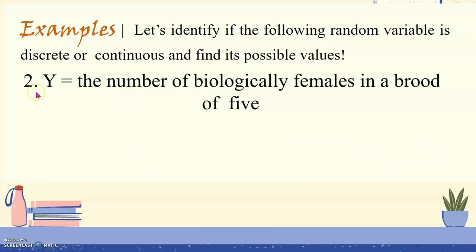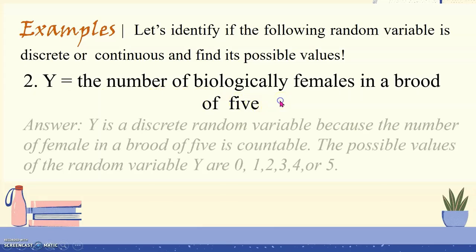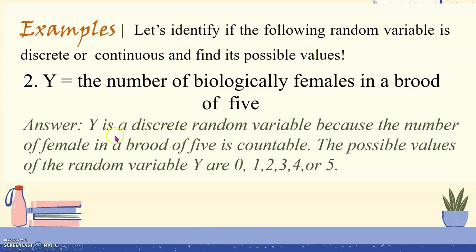Number 2: the random variable Y is the number of biologically females in a brood of 5. Y is a discrete random variable because the number of females in a brood of 5 is countable. The possible values of Y are 0, 1, 2, 3, 4, or 5.